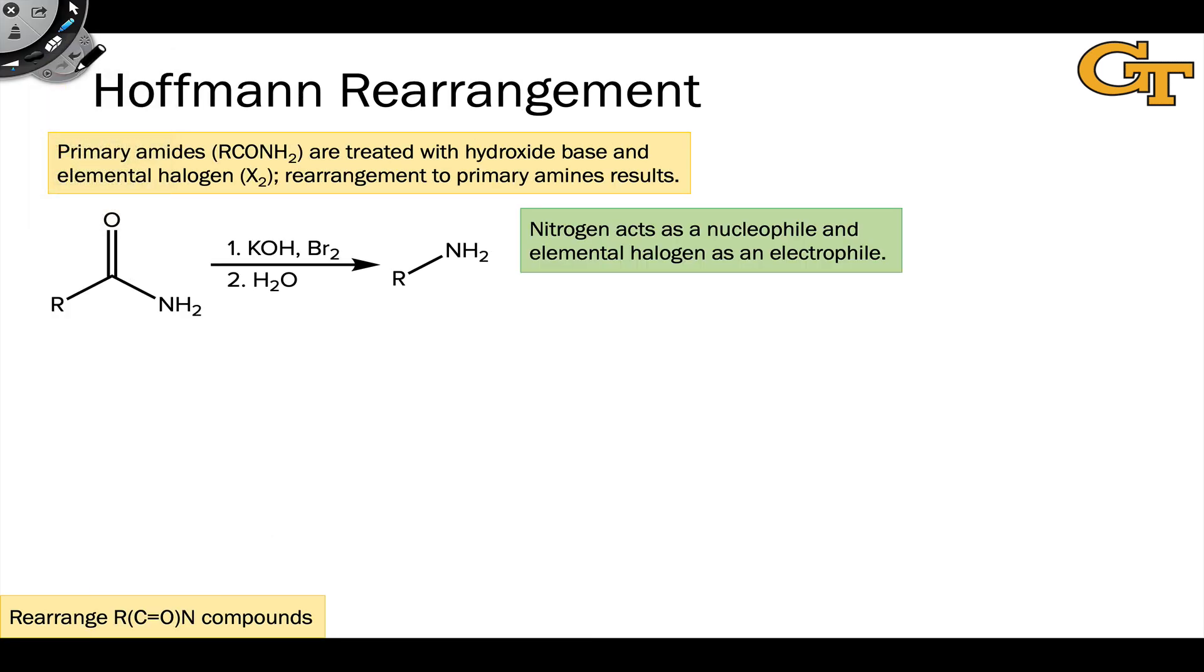Finally, we're going to end our discussion of synthetic methods for amines by looking at two rearrangements, which start from compounds containing a carbonyl group linked to nitrogen. The reason I've left the nitrogen open is what the nitrogen is linked to tends to be a little bit off the wall, but we'll see the details on this slide and the next. The first example we're going to look at is called the Hoffmann rearrangement.